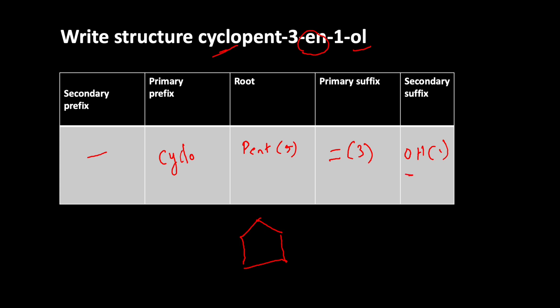In the first position, the OH group is present. Now give the numbering. Numbering always starts from the OH group, so one, two, three, four, five.